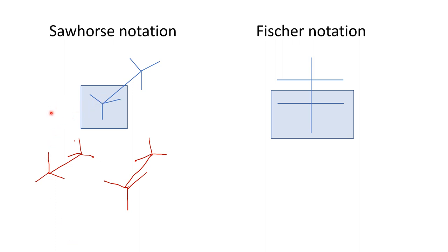But now what we are looking at is how to convert a sawhorse notation to a Fischer's notation. So always remember, in case of sawhorse notation there are different ways in which it can be written. But the way in which it should be converted is this: whichever form of notation you see, the notation should be converted in such a way that the atoms that are attached to the chiral carbon atoms are in the shape of a Y.